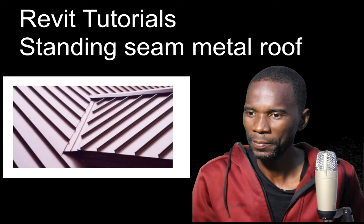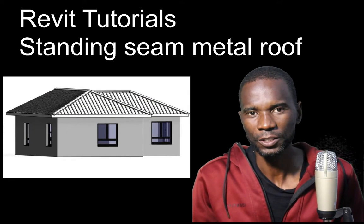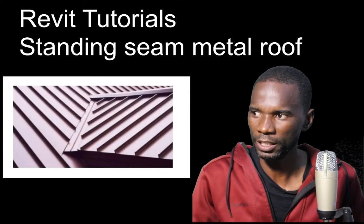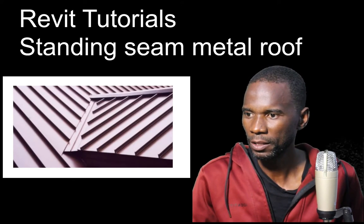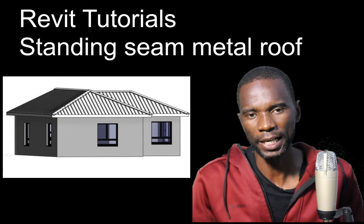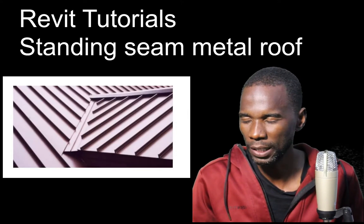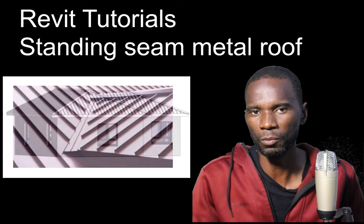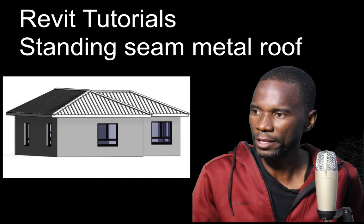Hello there and welcome to this exciting lesson in Revit architecture. In this lesson, we are going to look at roofs in Revit and specifically a standing seam metal roof. The method we are going to use is to convert the ordinary roof to a sloped glazing, and then manipulate the sloped glazing by making use of the grids and mullions so that we can achieve what we are seeing right there.